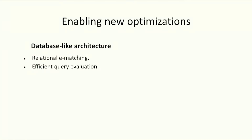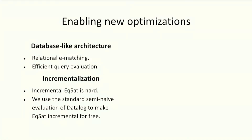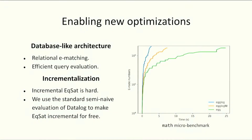We evaluate egglog with three experiments. First, we compare with state-of-the-art equality saturation frameworks. Because egglog's database-like architecture allows us to use relational e-matching for free, as well as efficient query evaluation algorithms from the database community, egglog is also the first system supporting incremental equality saturation — achieved using standard semi-naive evaluation from the datalog world, basically for free. The macro benchmarks show that the non-incremental version of egglog achieves a 3x to 34x speedup over egg, and with incrementalization we achieve a total of 9.27x speedup over egg.